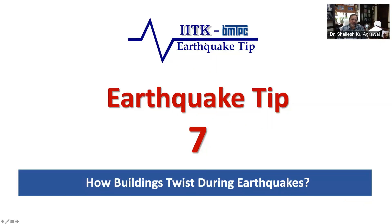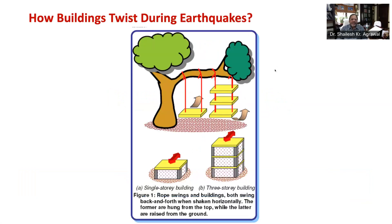Earthquake Tip No. 7 will educate you on how buildings twist during earthquakes. Let us first understand why buildings twist during earthquakes. Let me give you the analogy of a swing. As you can see in this figure, we all enjoyed a rope swing in our childhood. The swing comprises of a wooden cradle or a plank tied with coil or nylon ropes to the strong branch of a tree.